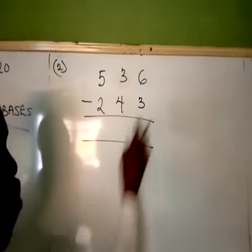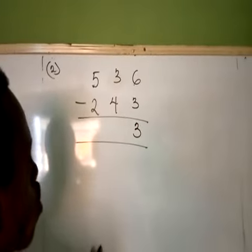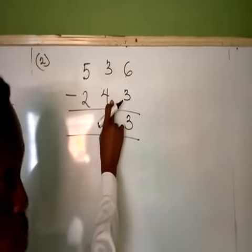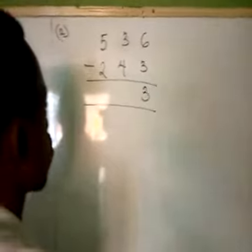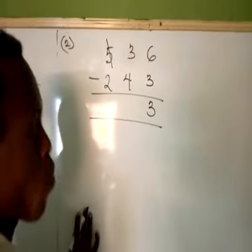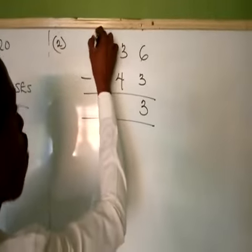6 take away 3, that will give me 3. 3 take away 4, is that possible? No. What do we do? In this case, just like you always do in your subtraction, you borrow 1 from here. When you borrow 1, what do you have left? 4.